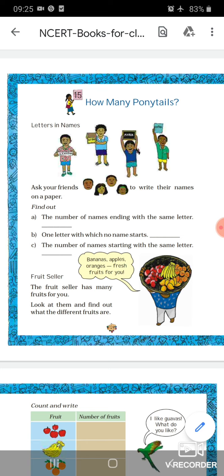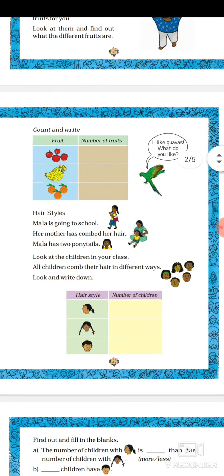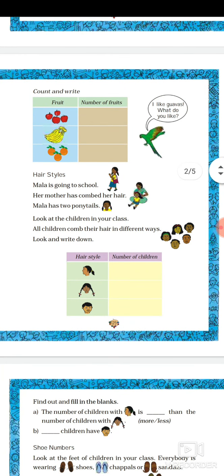You can see there is a fruit seller who has many fruits for you. Look at them and find out what the different fruits are. You can see in the basket there are bananas, apples, oranges, and fresh fruits. Count and write how many apples, bananas, and oranges are there — write the number of each fruit.